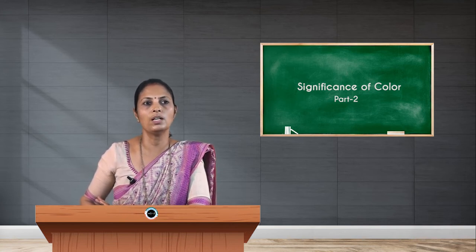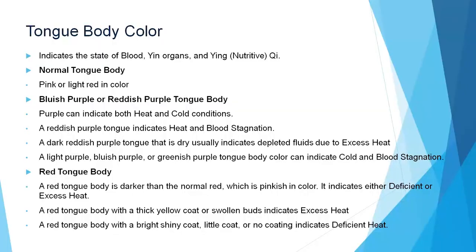Normal tongue color is red, light red, or pink with slight moisture. The tongue body color indicates the state of blood, yin, yang, and chi. If there is any excess or deficiency of yin, yang, or chi, it is reflected in the tongue body. A normal tongue body refers to a pink or light red color.